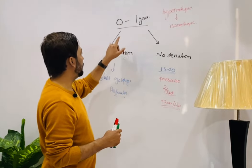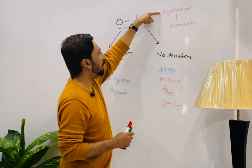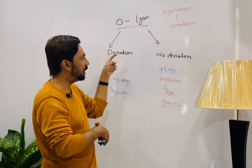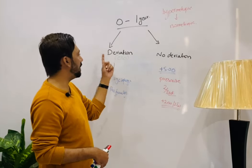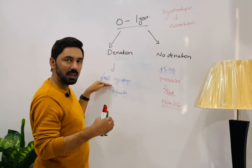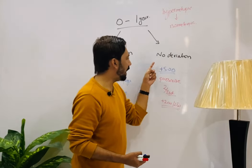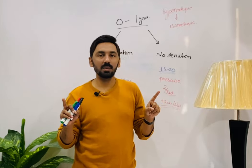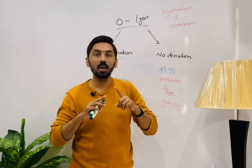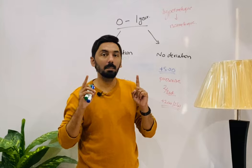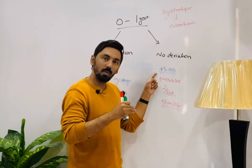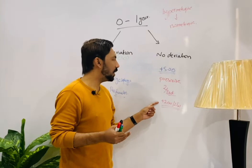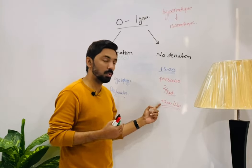To repeat: age zero to one year, refractive error is isometropic hypermetropia. With deviation — if deviation is esotropia — prescribe full correction after cycloplegia. Without deviation — if hypermetropia is plus one, two, three, or four in both eyes — do not prescribe. But if the prescription is plus five or more, prescribe two-thirds of the correction, such as plus two or plus two point five.